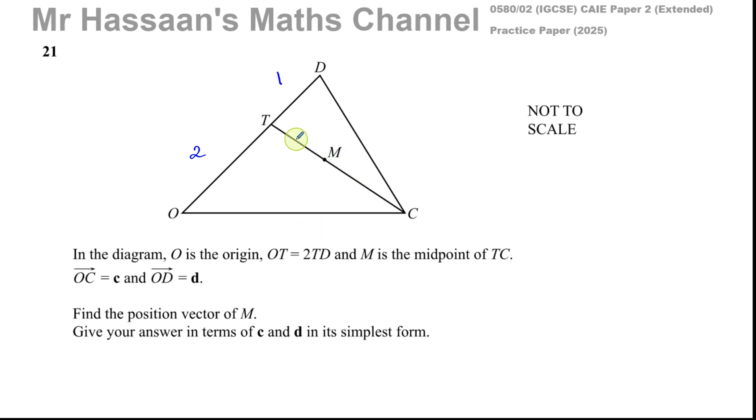And M is the midpoint of TC, so TM and MC are equal to each other, the same length. O to C is c, so this whole vector here, O to C is the vector c. And O to D, the whole of this vector is D.